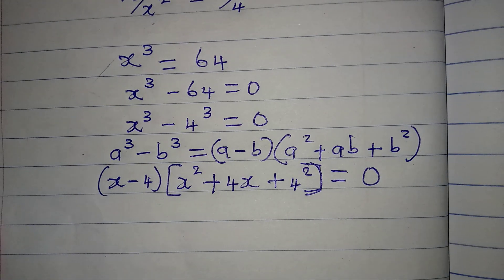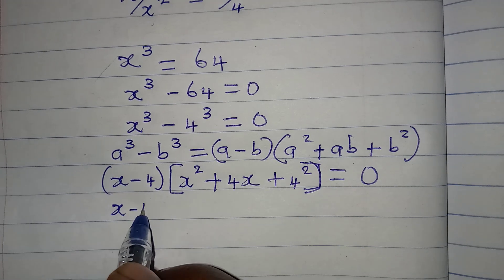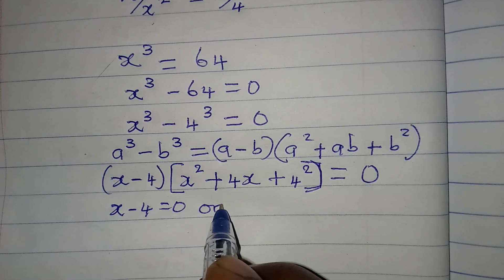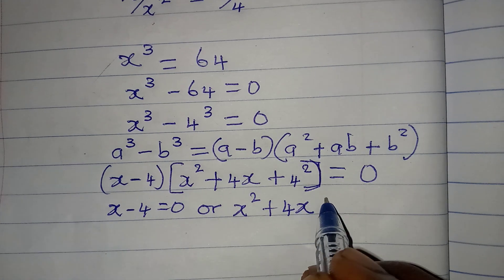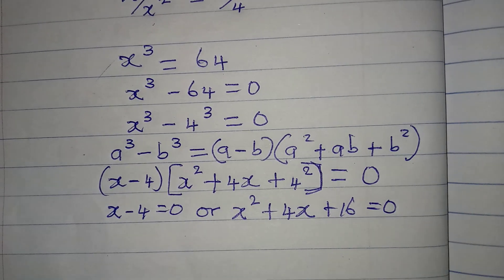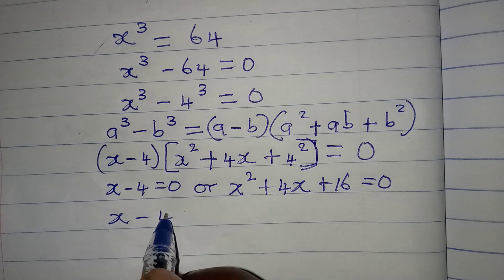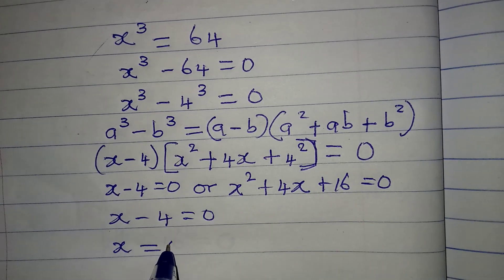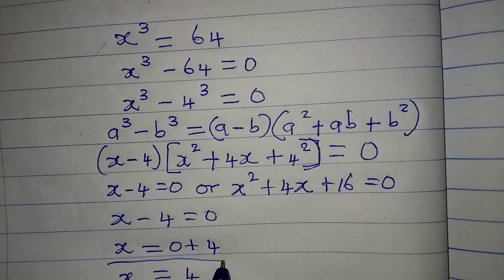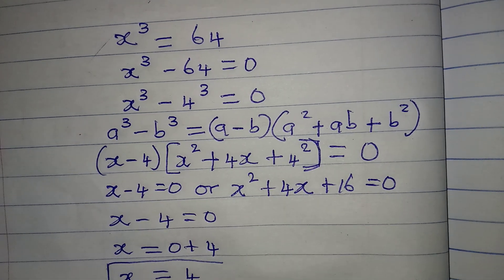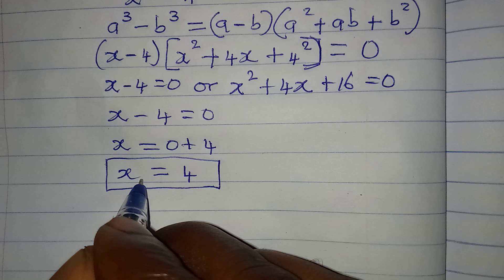Now we are going to apply the zero product rule, to say that either x minus 4 is equal to 0, or x squared plus 4x plus 16 is equal to 0. Let's deal with the linear equation first: x minus 4 equals 0, meaning x equals 4. This becomes our real solution, x1 equals 4.